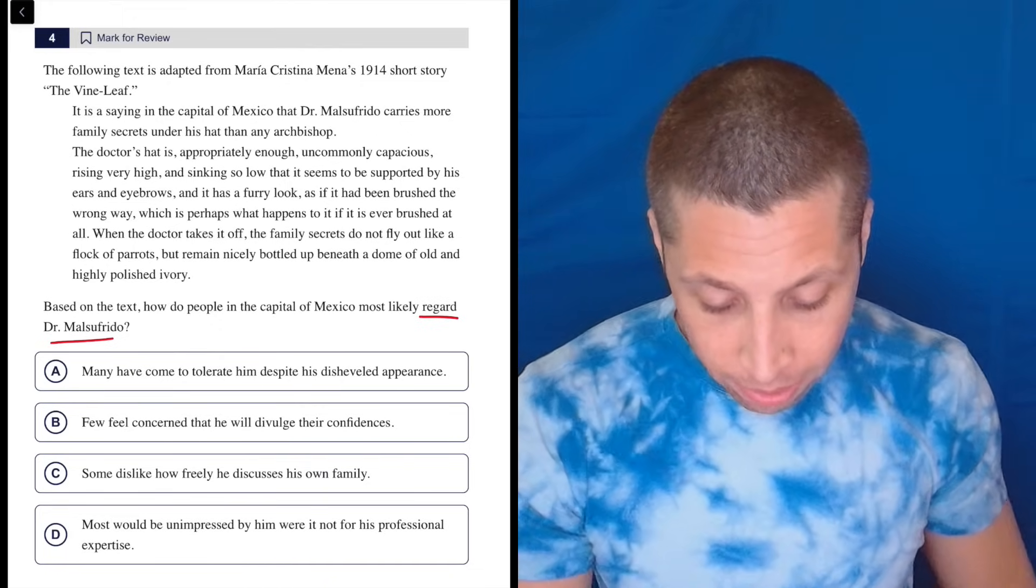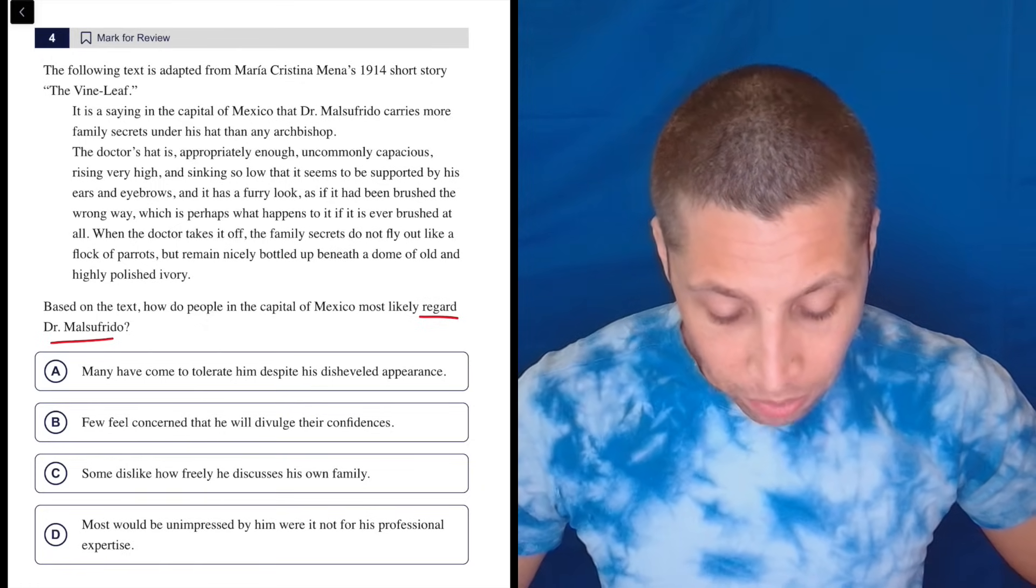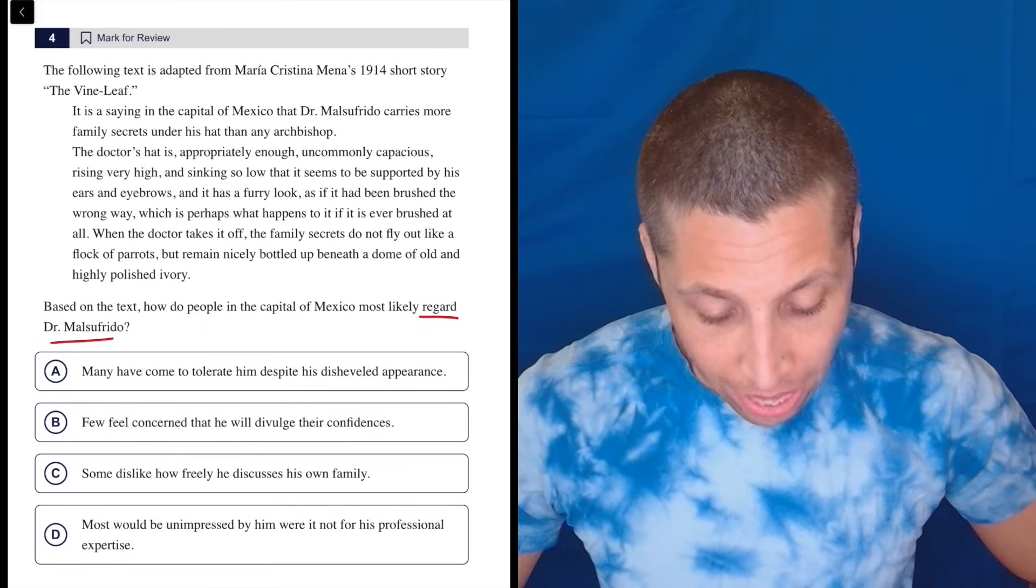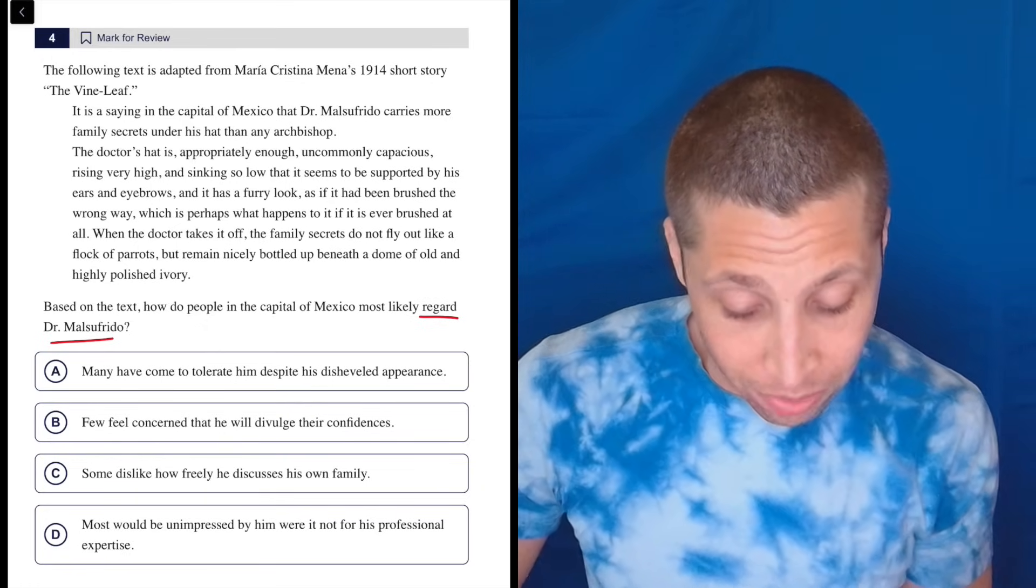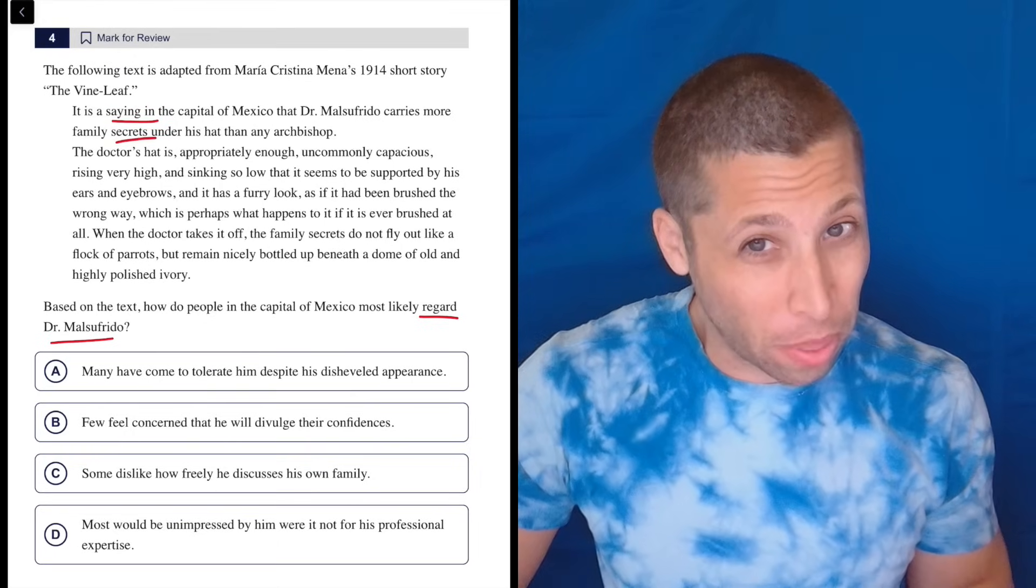Okay, it's from the short story. It is a saying in the capital of Mexico that Dr. Malsufrido carries more family secrets under his hat than any archbishop. Okay, so if it's a saying, then that he's secretive, that seems like what other people would think of him, right?